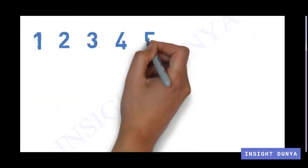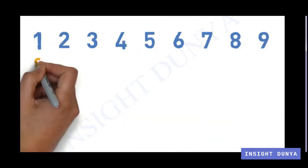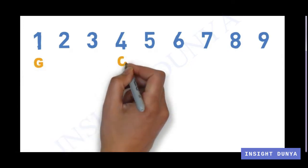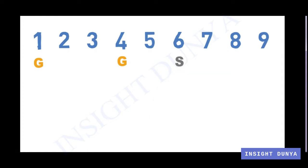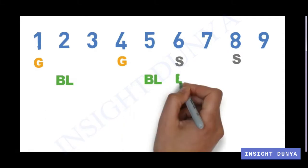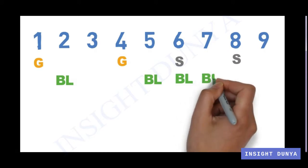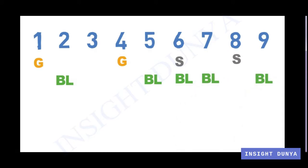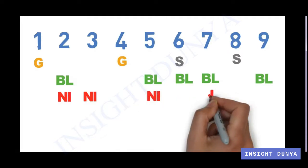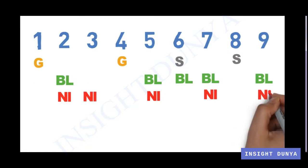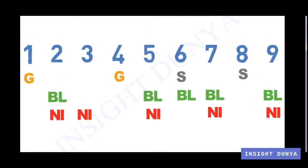There are nine jewelry sets. Set one and set four are gold sets. Set six and set eight are silver sets. Sets two, five, six, seven, and nine are beadless. Sets two, three, five, seven, and nine have no impurities.